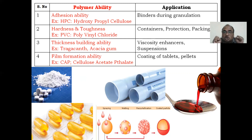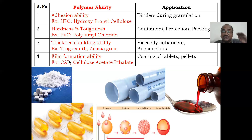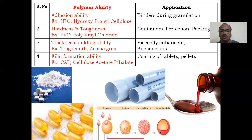Next, thickening ability — some polymers increase the viscosity, boosting the thickness of a formulation. If you want a very high-viscosity suspension or emulsion, you use polymers like tragacanth or acacia gum; these increase viscosity. Film formation ability — these polymers form a smooth film. For example, by spraying a polymer onto a tablet, the tablet surface becomes covered and a smooth film forms around it, just like a cap. Cellulose acetate phthalate is used for coating of tablets and pellets because it forms a film.